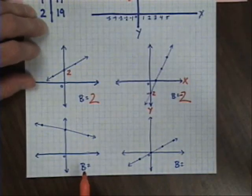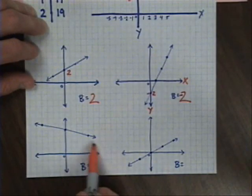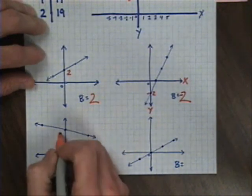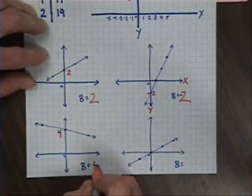Down here in my third example, I have the line crossing at one, two, three, four spaces above the origin, so b is 4.